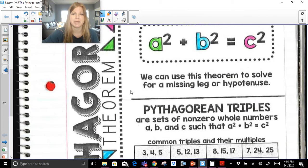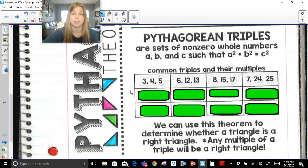Now, after we use the Pythagorean theorem, we can also find triples. Triples simply mean that they are non-zero whole numbers A, B, and C, such that A squared plus B squared equals C squared. For example, 3, 4, 5 is a triple, because 3 squared, which is 9, plus 4 squared, which is 16,